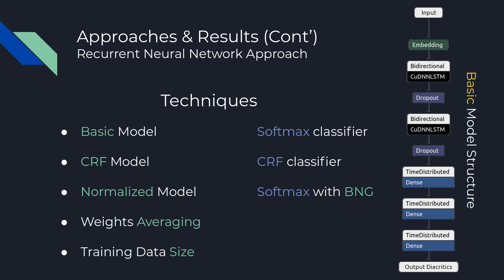We tried several techniques to enhance this model. Using a CRF classifier instead of softmax didn't work well. Using a normalized ADAM optimizer improved results slightly. The big improvements came from weights averaging — averaging the weights of the last X epochs to overcome overfitting — and increasing the training data from 50,000 lines to 500,000 lines, which decreased the diacritic error rate by about 1%.